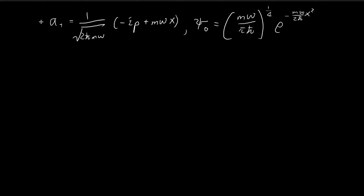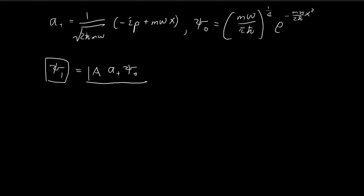So far we've defined the positive operator and derived that ξ₀ is equal to our known expression. Now we want to find what ξ₁ is equal to. Based on our derivations, you can guess that ξ₁ equals the positive operator a+ applied to ξ₀, multiplied by some normalizing constant. So in order to find ξ₁, we need to evaluate this expression and find what a should be so this function is normalized. First, let's set our sights on finding what a+ξ₀ should be.